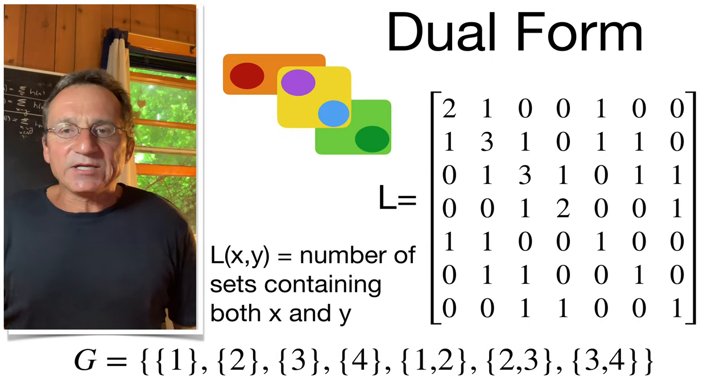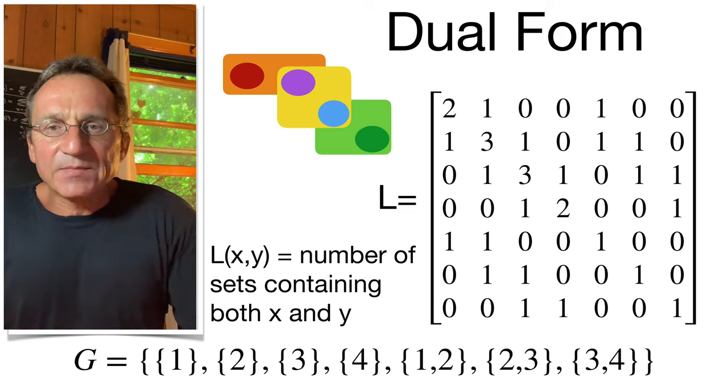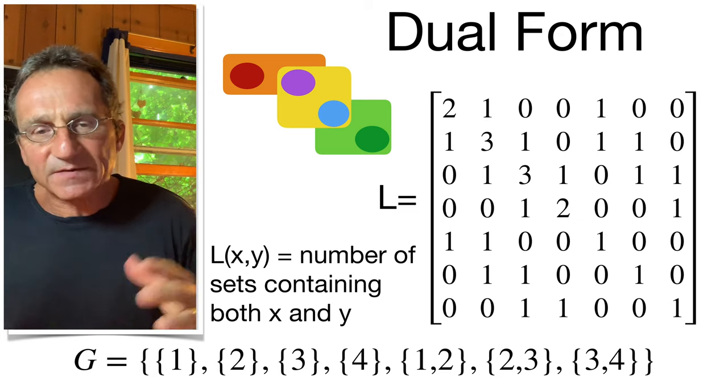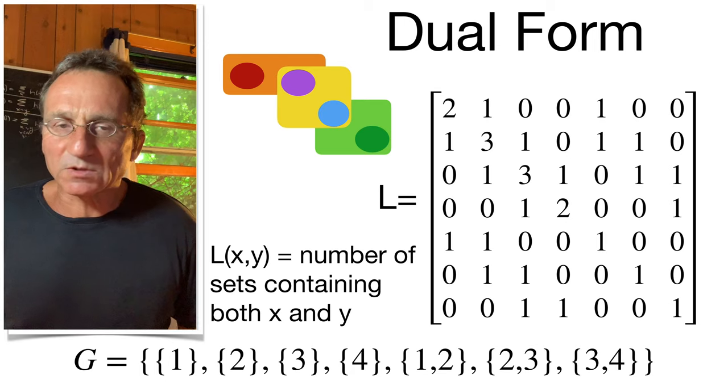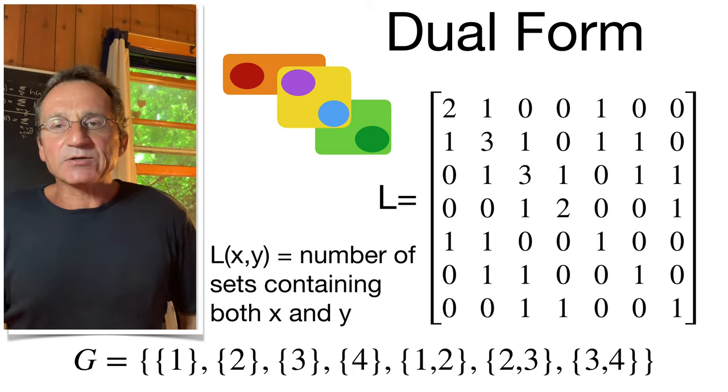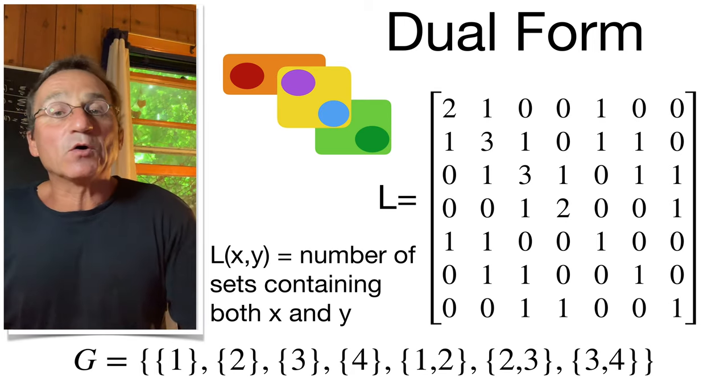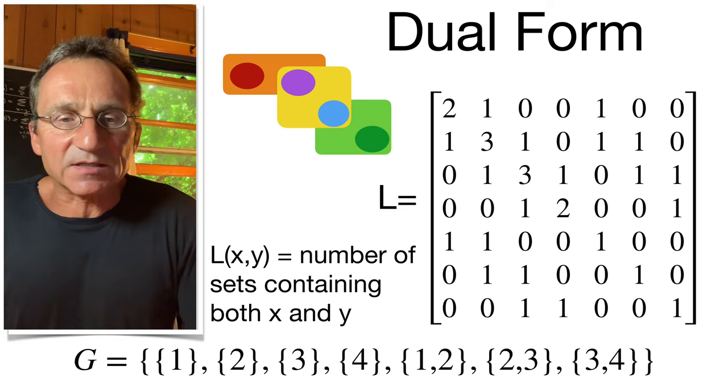There's a dual bilinear form. By doing the same thing with the set complements, we can find a dual construct here. Alternatively, we can define Lxy as the number of sets which contain both X and Y.